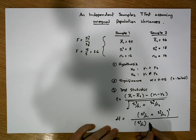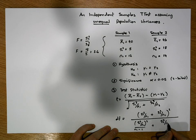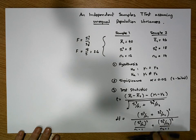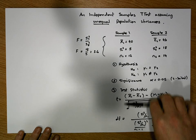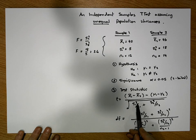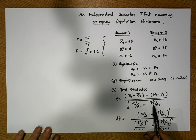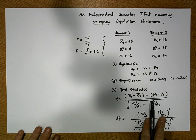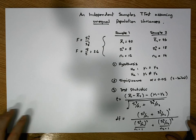The degrees of freedom formula looks complicated but is straightforward: it's (s1-squared/n1 + s2-squared/n2) squared, divided by (s1-squared/n1)² / (n1−1) plus (s2-squared/n2)² / (n2−1). There's a shortcut: the terms s1-squared/n1 and s2-squared/n2 repeat in both formulas, so we calculate them separately first and plug the values in.